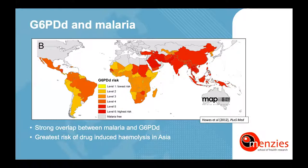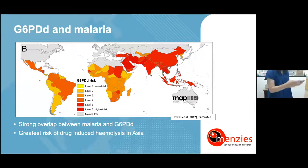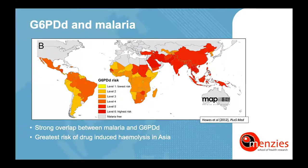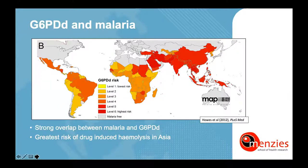Depending on G6PD deficiency prevalence and the variants present in a population, the risk of drug-induced hemolysis differs on a population level. In 2012, Ross Howes modelled this risk for all countries worldwide that reported malaria cases. She categorized each country into one of six levels, from very low to very high risk of drug-induced hemolysis. She identified most of the Middle East and more or less all of Asia falling into levels five and six, indicating very high risk.